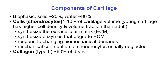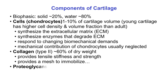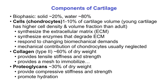The matrix is primarily type 2 collagen, which occupies about 60 percent of the cartilage dry weight. Collagen provides tensile stiffness and strength and provides a mesh to immobilize the proteoglycans, which occupy about 30 percent of the dry weight of the tissue. Proteoglycans provide compressive stiffness and strength and promote hydration.